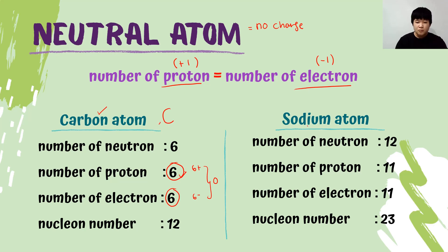For the sodium atom, the proton number is 11 and the number of electrons is also 11. Therefore they cancel each other out and the sodium atom is neutral.